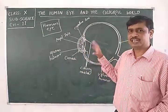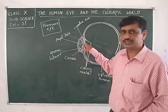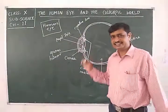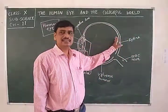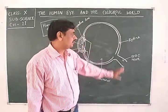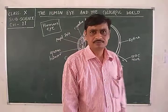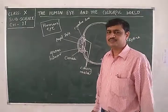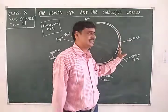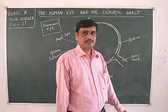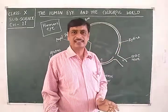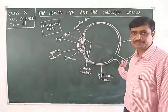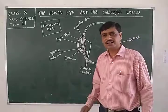The eye lens is convex in nature and acts as a convex lens. When light is refracted through this convex lens, it forms a real and inverted image at the retina. After image formation on the retina, light-sensitive cells — rods and cones — convert the image into electrical signals, which are carried by the optic nerve to the brain, which then interprets the image.